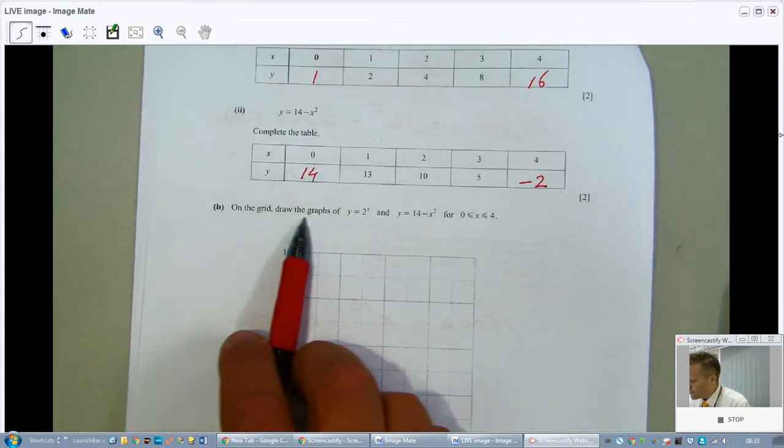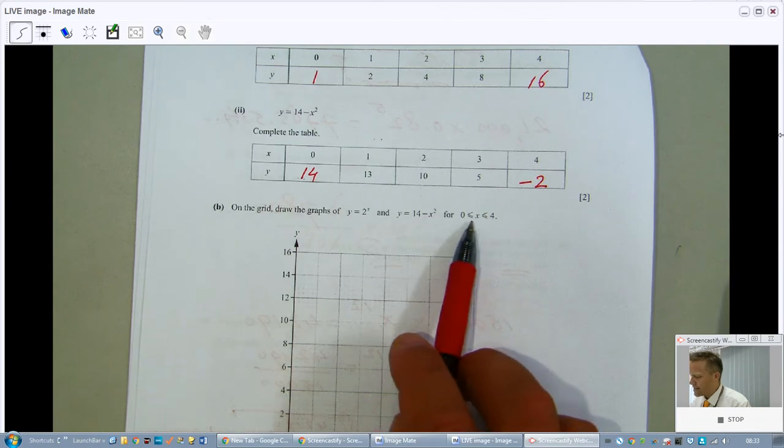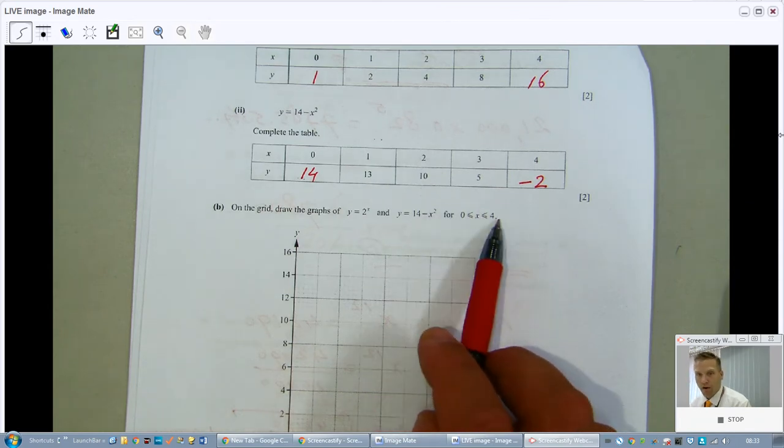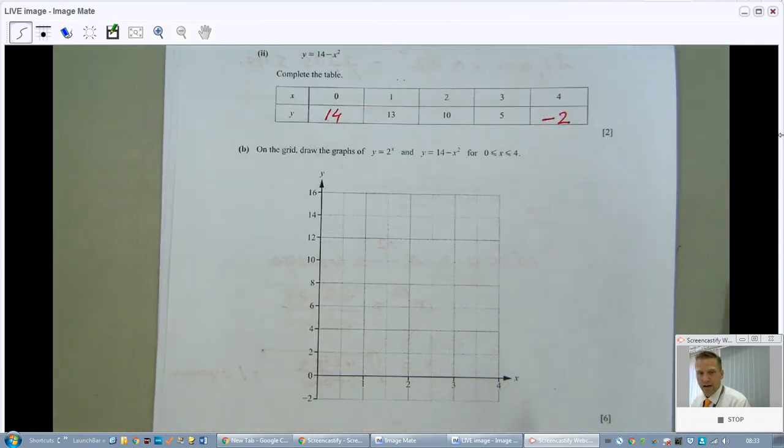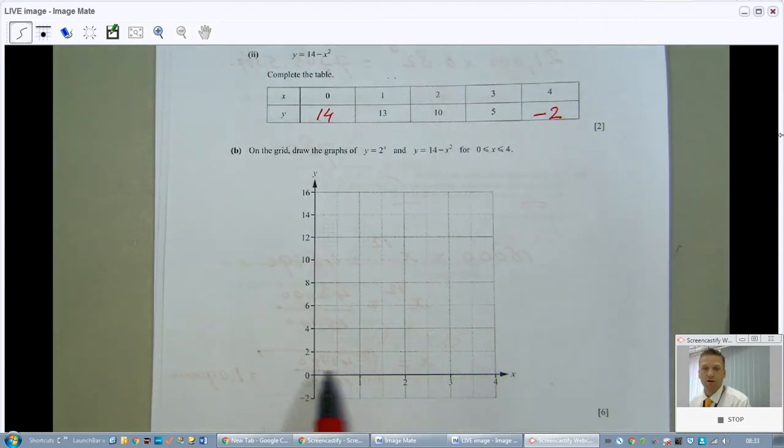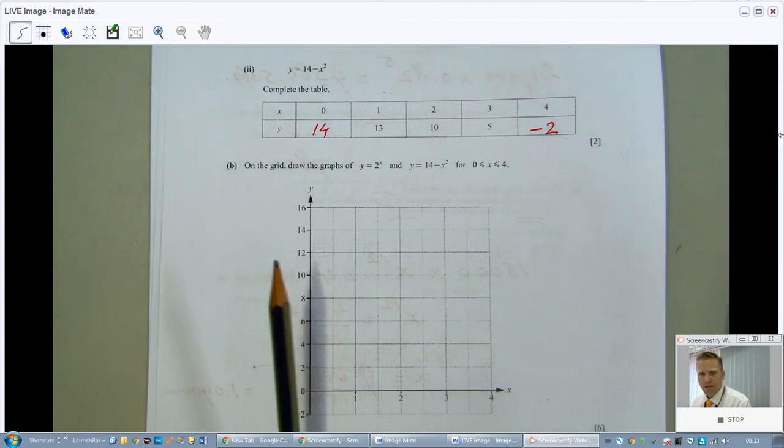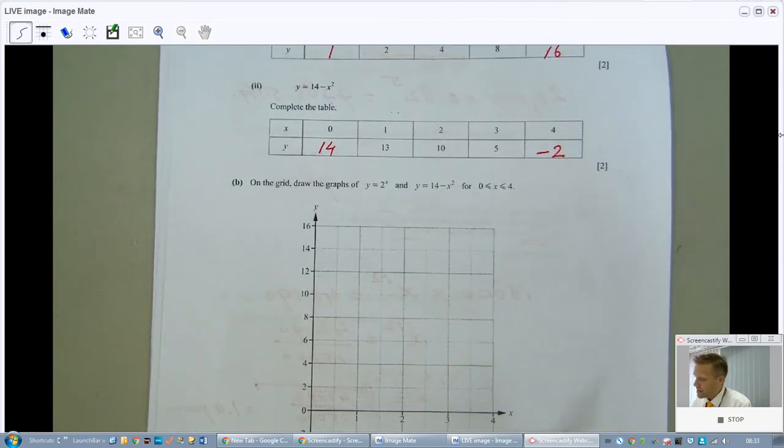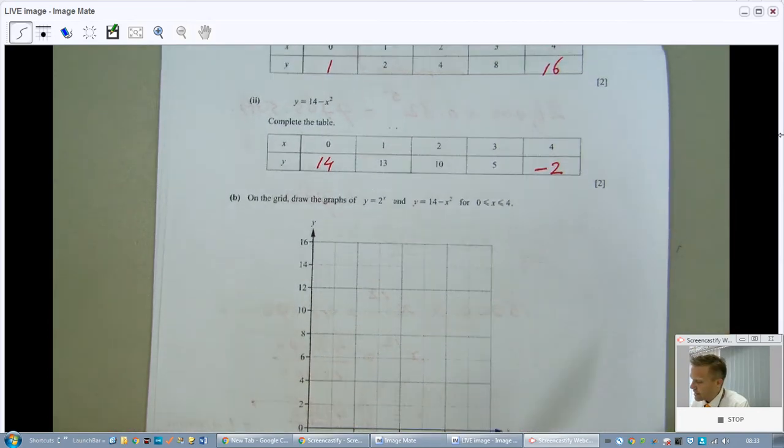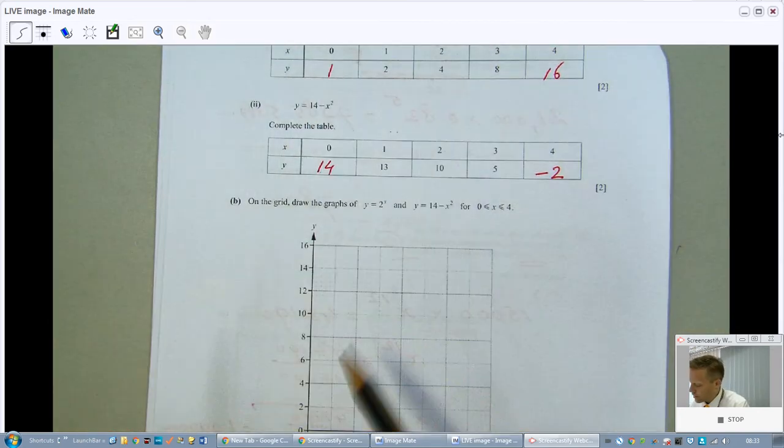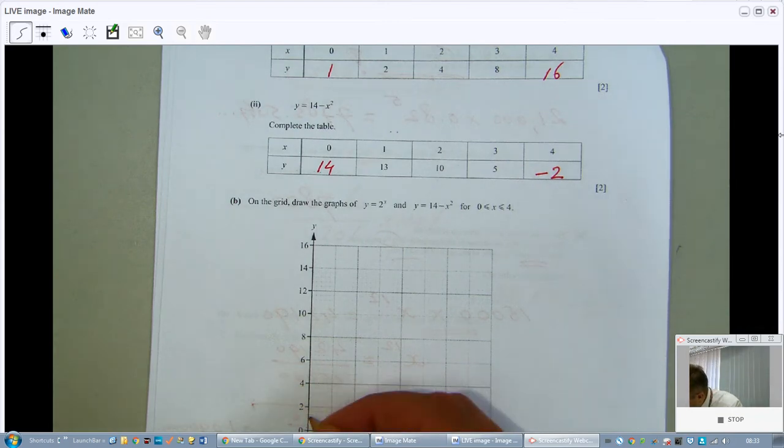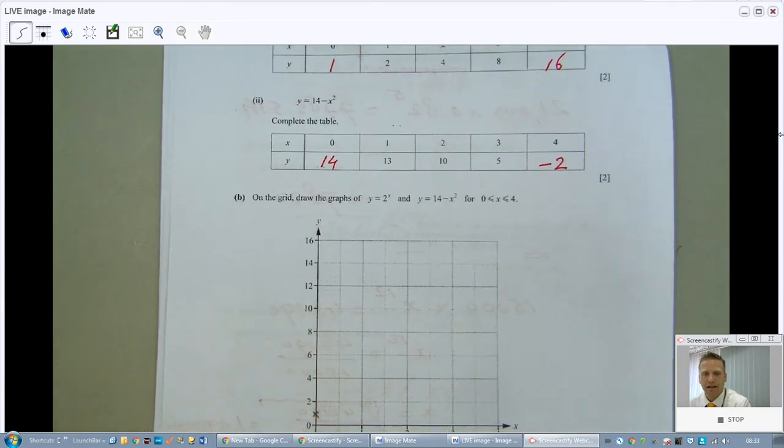And then they ask, on the grid, to draw the two functions for when X from 0 to 4. That's the domain. And, luckily, the grid they give us also starts at 0 and finishes at 4. So, we use a pencil. And this is still where a lot of students go wrong. Plotting coordinates. So, take care. Let's start with the exponential. When X is 0, Y is 1. So, 0, 1. And have a good look at that scale. That will be there. So, you need a sharp pencil.